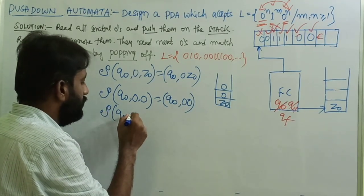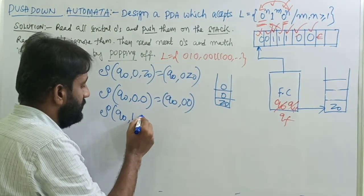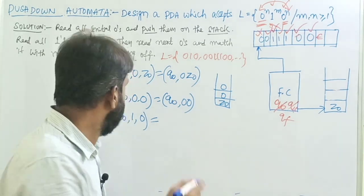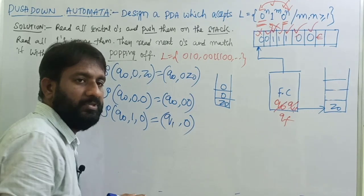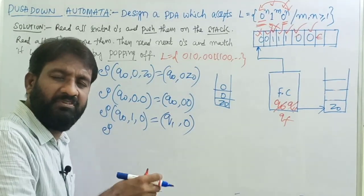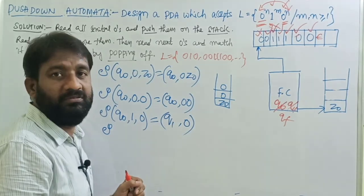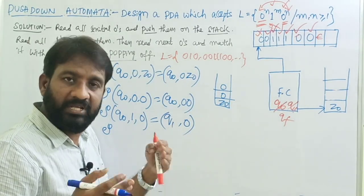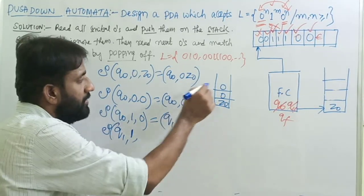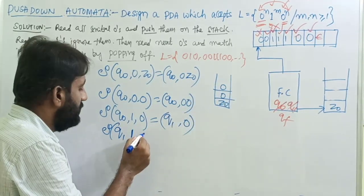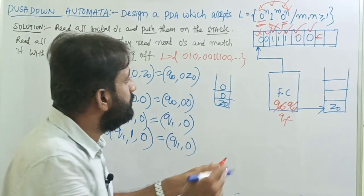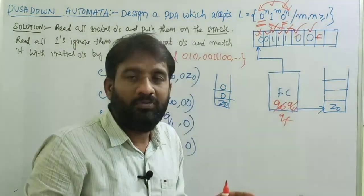Next, transition of q0 with input symbol 1 and top of the stack is 0: change to the new state q1 by ignoring ones, meaning no push or pop operation on the stack — transition goes to q1, 0. If there are more ones, you read all of them in the same transition on state q1 with input symbol 1 and top of stack 0, without modifying the stack, resulting in q1, 0.